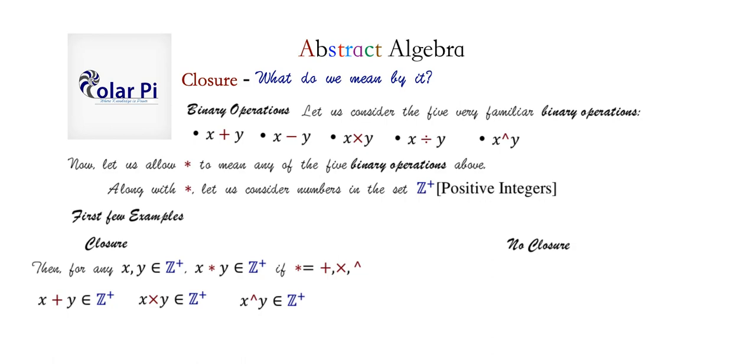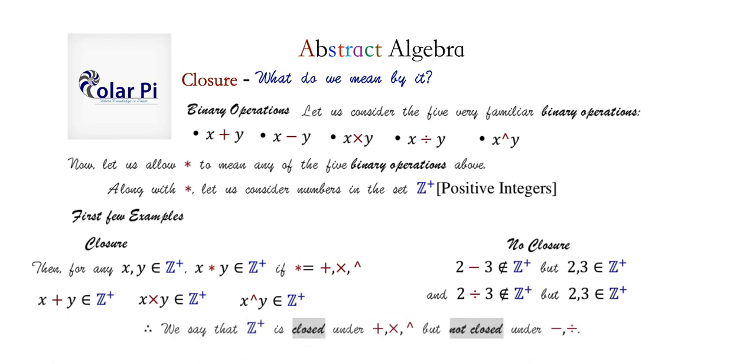And of course, we do not get closure under subtraction and division. For example, if we take two and three in the positive integers, then two minus three, which is negative one, is not in the positive integers. And similarly, two divided by three is not in the positive integers, and so division is not closed when the set is the positive integers, and neither is subtraction. So here is what we just said summarized at the bottom.